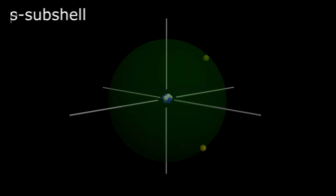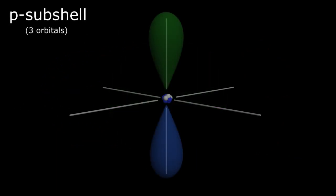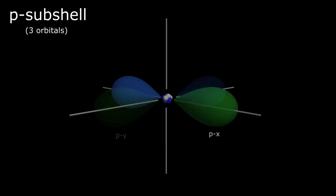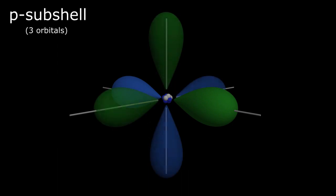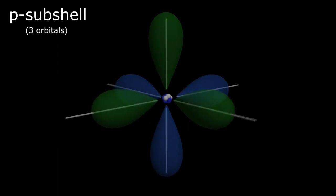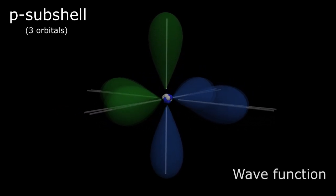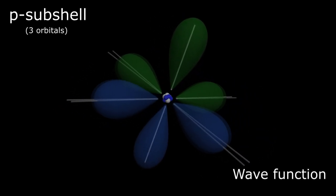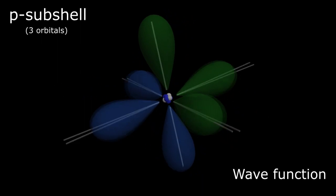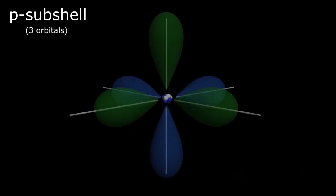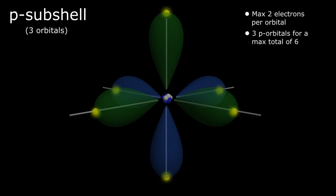However, each of the three P orbitals are dumbbell-shaped orthogonally oriented along the Z, Y, and X axis in space. The green and blue coloration represents the positive and negative lobes, respectively, and is an arbitrary designation based on the wave function that defines the statistical path of the electrons. Again, each orbital can hold a maximum of two electrons for a total of six in the P shell, but in nitrogen, each orbital is half-filled, holding a single electron for a total of three.